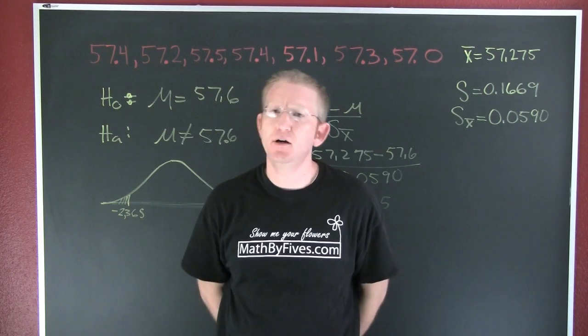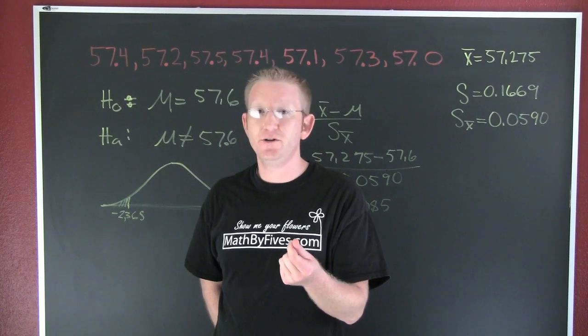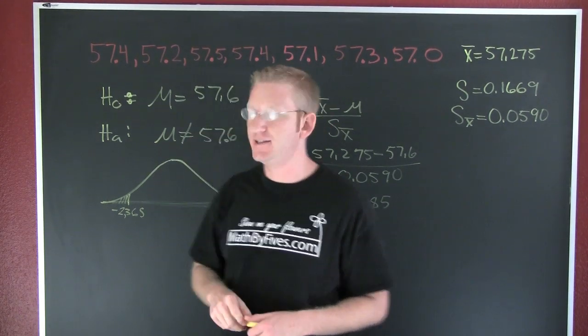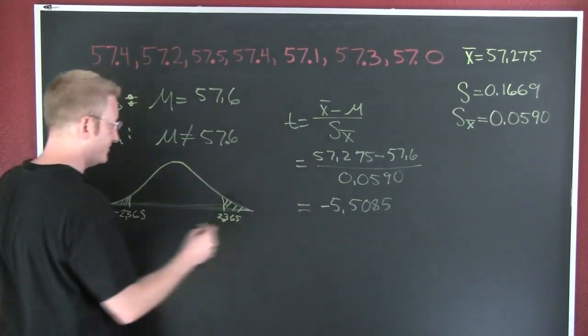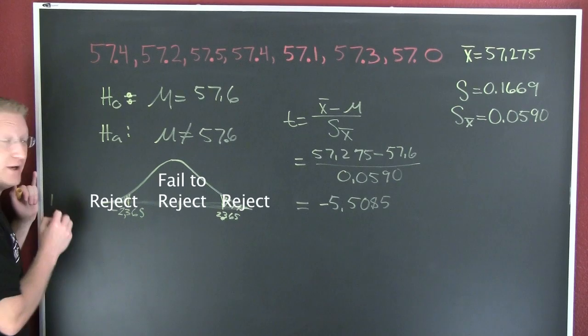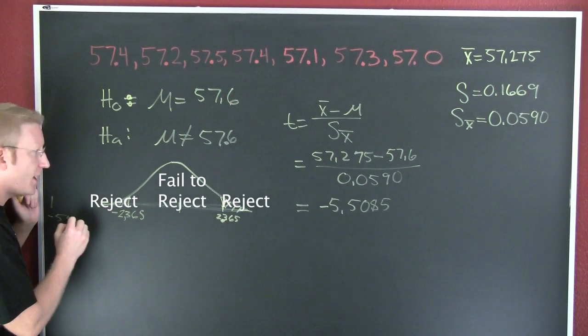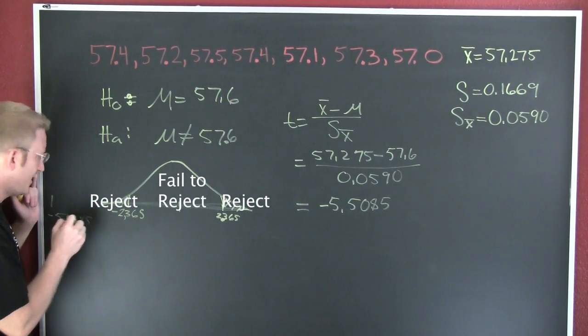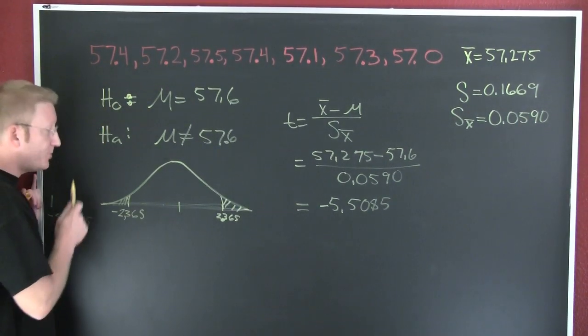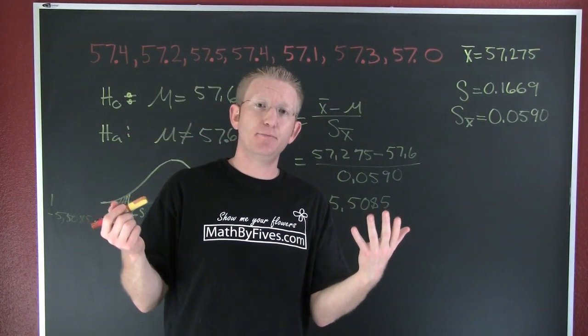Now let's see if that falls far enough away from our would-be average to conclude whether or not we would reject this. Where, where, way over here. I'm even out of the board. Here, this is minus 5.085. Does this land in the rejection region? If I was on this whole borderline concept, this would be way out of the norm. Let's see how far out of the norm it actually is. Let's calculate the p-value.